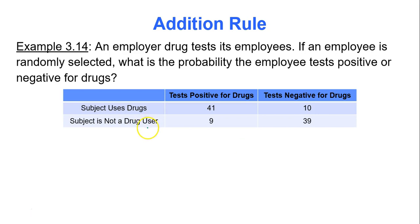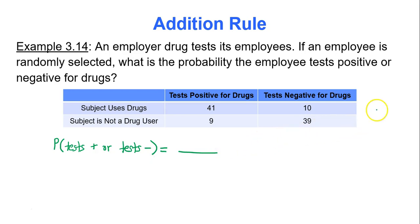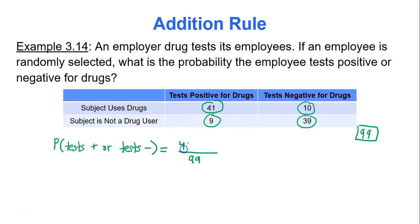Example: an employer drug tests its employees. If an employee is randomly selected, what is the probability the employee tests positive or negative for drugs? The total is 99 people: 41 plus 9 plus 10 plus 39. The positive results are 41 and 9; the negative results are 10 and 39. Since all results are either positive or negative, we get 99 over 99, which equals 1.